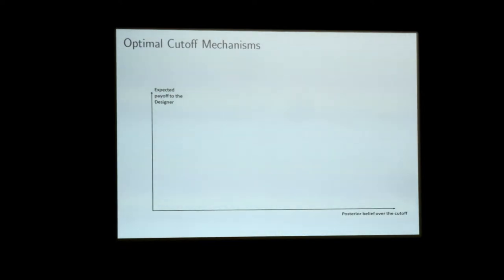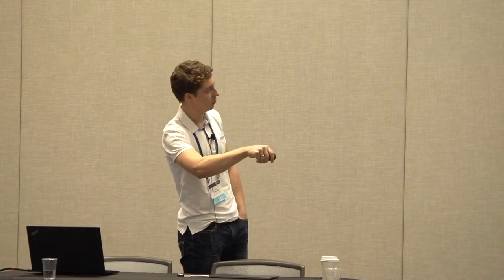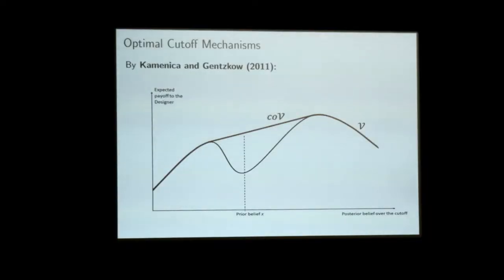Conceptually, let me explain this with a graph. On the x-axis, I want to think about posterior beliefs over the cutoff that can be induced by different signals. On the y-axis is the payoff to the designer. For every belief I can induce about the cutoffs, I get some payoff as the designer. If I don't disclose any information, I get the payoff determined at my prior belief. What we know from a famous paper by Kamenica and Gentzkow, going back to earlier work, is that the best you can do with information disclosure is the concave closure of this function — the smallest concave upper bound.